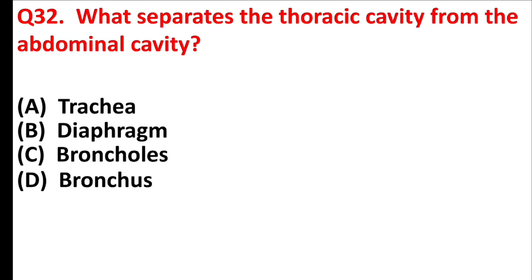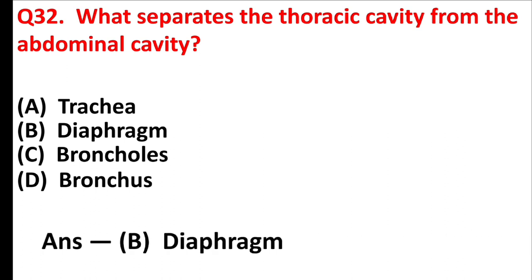What separates the thoracic cavity from the abdominal cavity? Answer is Option B, Diaphragm.